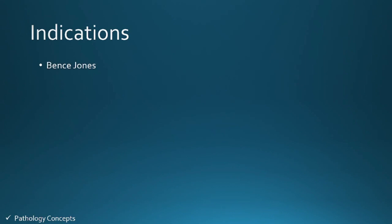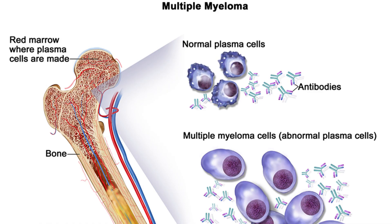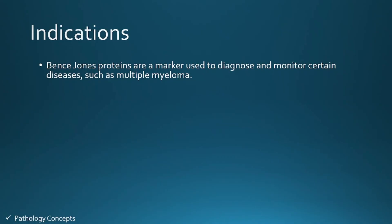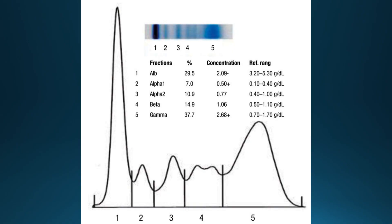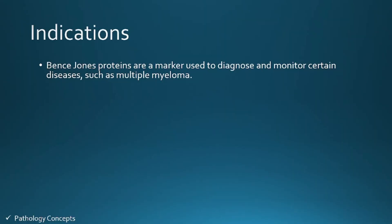Bence Jones proteins are a marker used to diagnose and monitor certain diseases such as multiple myeloma. They are used in combination with other tests like serum electrophoresis and serum free light chain assays to detect plasma cell dyscrasia.